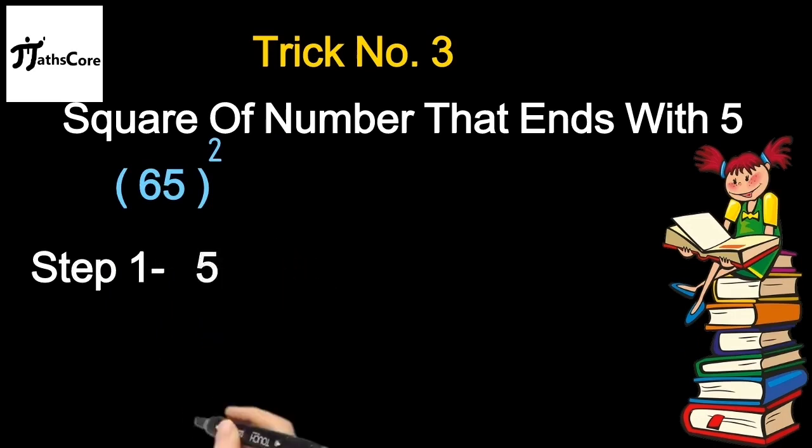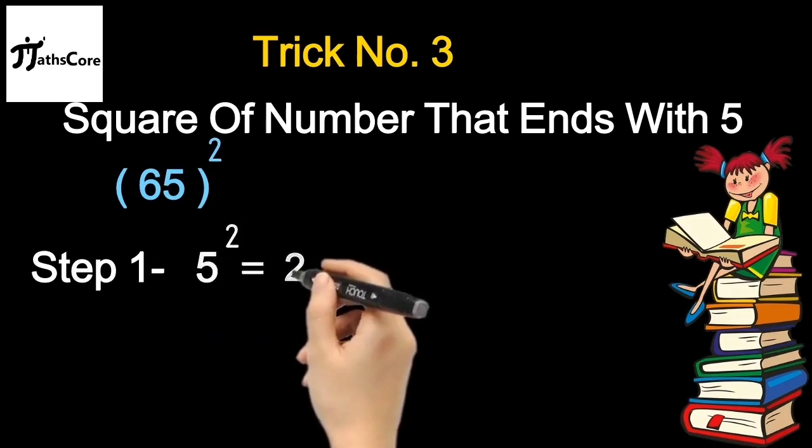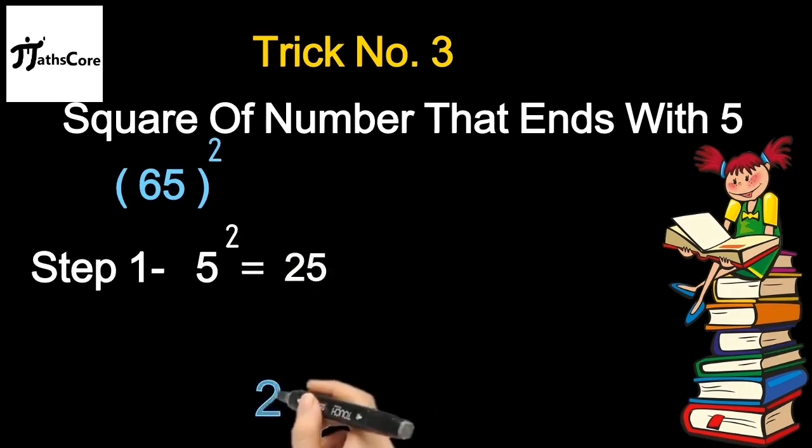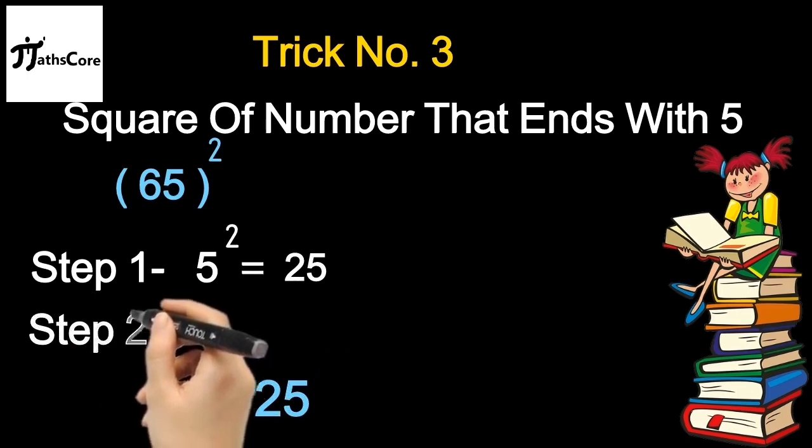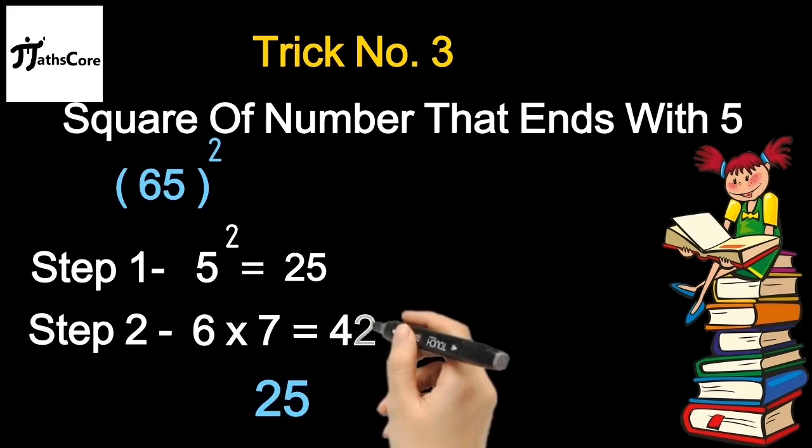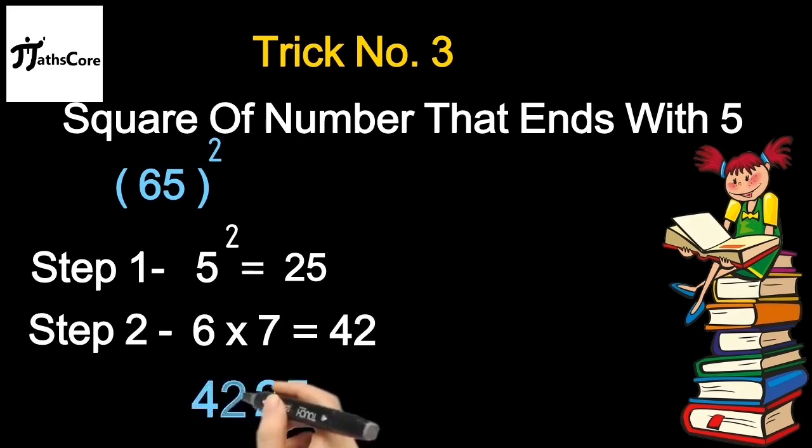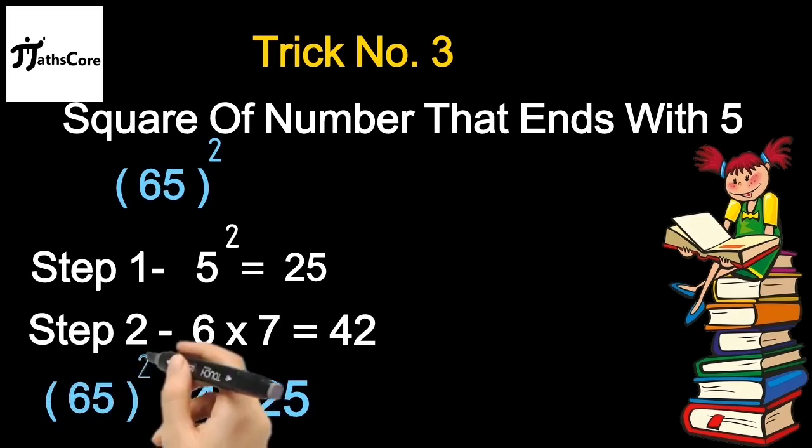In the first step you need to take square of unit place digit 5. So 5 square equals 25. Write down this 25 in the answer. In the second step you need to take tens place digit 6 and multiply it with its consecutive number 7. So 6 times 7 is 42. And write down this 42 before 25. And this is your final answer: 65 square equals 4225.